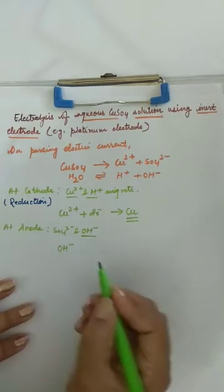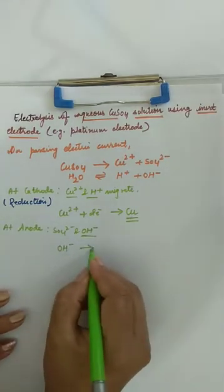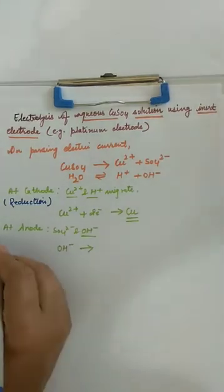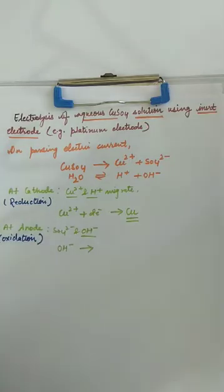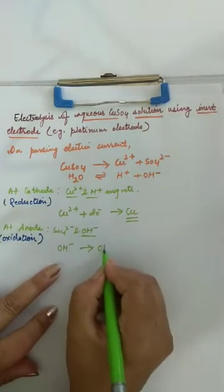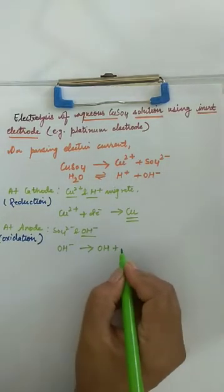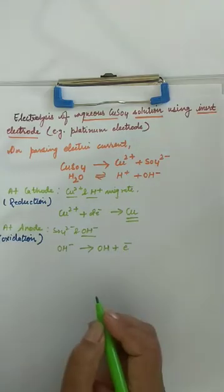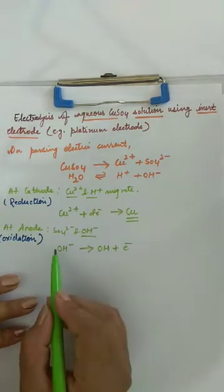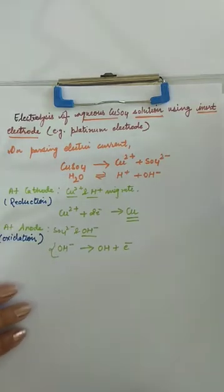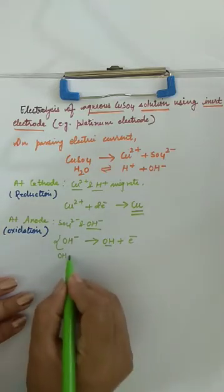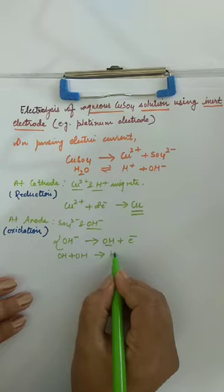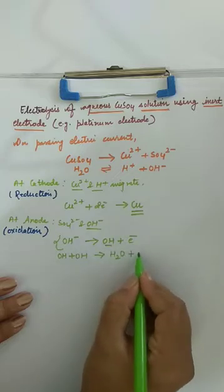So, hydroxide at anode — oxidation occurs. Hydroxide will lose an electron to form OH plus e-. And this OH is not stable. So this OH plus OH will combine to form H2O plus oxygen.